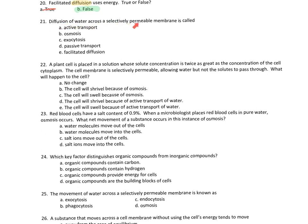Diffusion of water across selectively permeable membranes is called what? Osmosis. It's osmosis. And as soon as you see 'diffusion of water' — this is about the fourth time we've seen that same question. So if you got a lot of them wrong, my guess is you got one or two basic concepts wrong and just kept messing up on those.